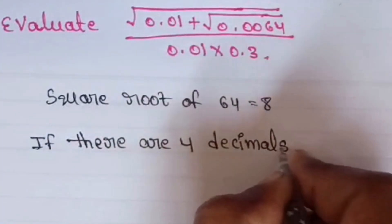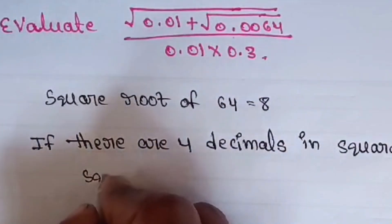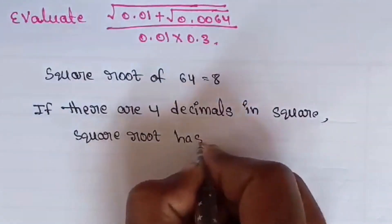So generally if there are 4 decimals in a square, then the square root contains only 2 decimals.